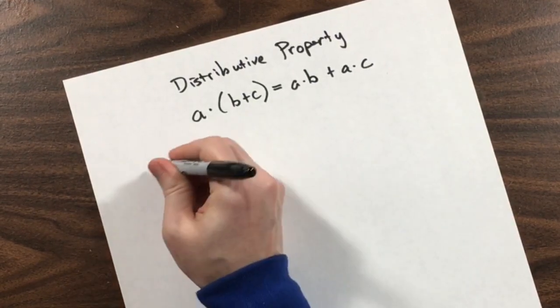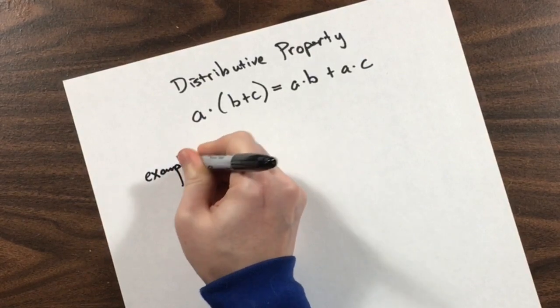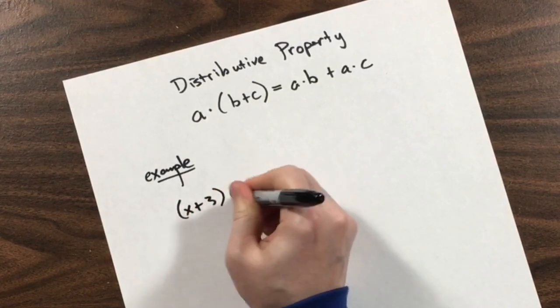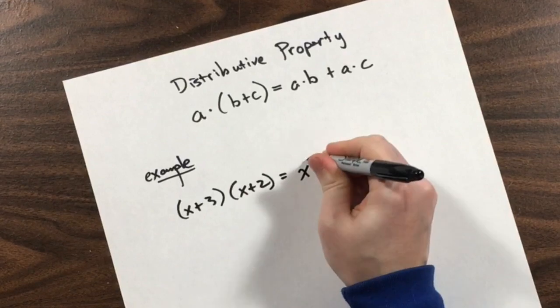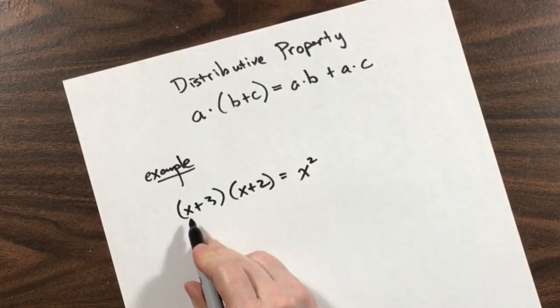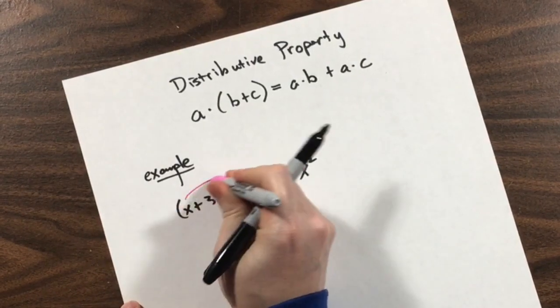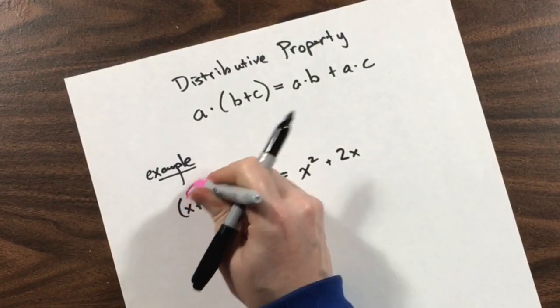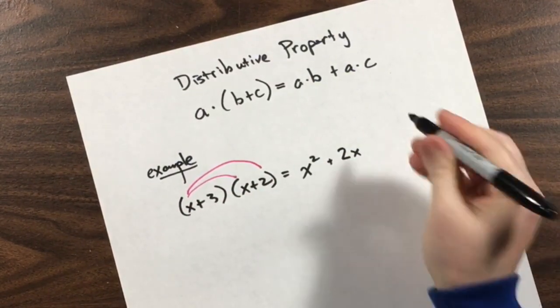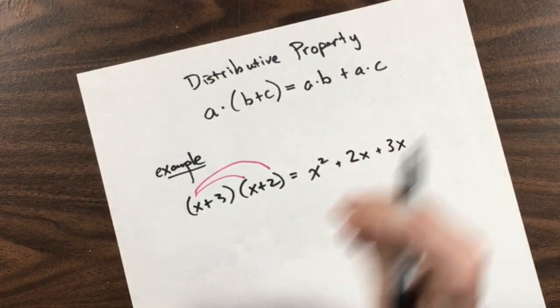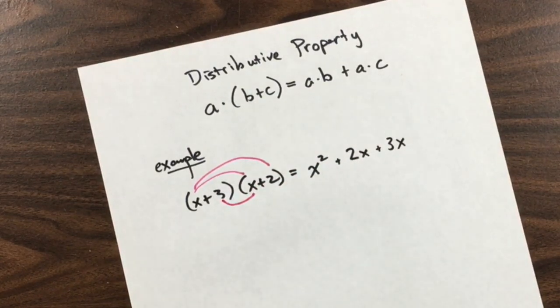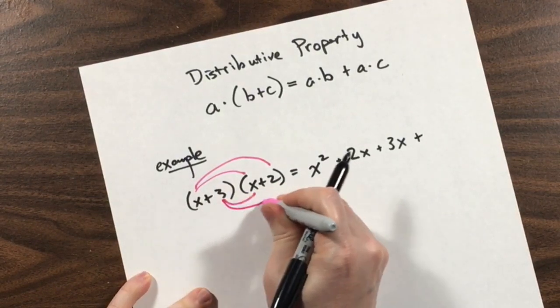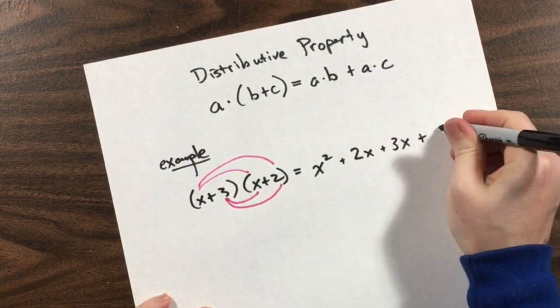It's because of the distributive property that I can multiply polynomials. Take, for example, (x + 3)(x + 2). You can multiply those out, and algebra tells us that you get x squared. That's the first term times the first term. We get 2x, that's the first term times the last term. We get 3x, that is the second term times the first term. And last but not least, we get the last term times the last term. In this case, it would be 6.